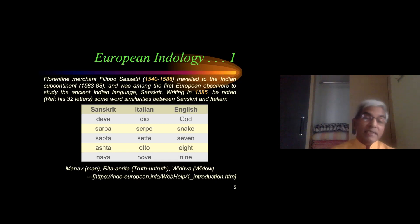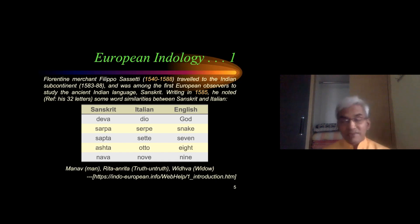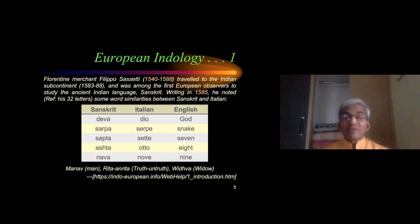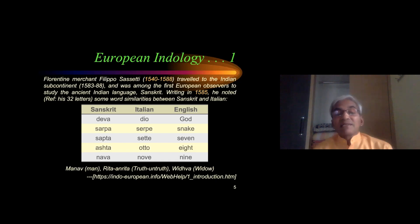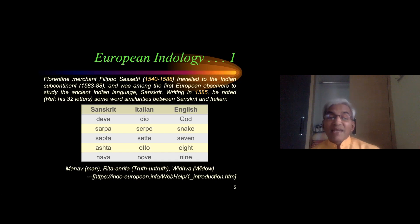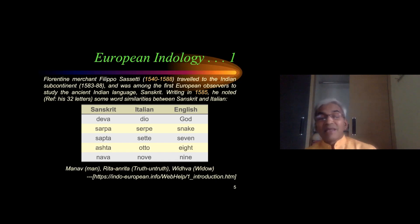He compared Sanskrit with Italian, and later it was compared with English also. He noted several words like Deva, Sarpa, Sapta, Ashta, Nava — which he compared with Italian equivalents: Deva/Dio, Sarpa/Sarpa (snake or cobra), Sapta/Sette (seven), Ashta/Otto, Nava/Nave. You also see similar words like Manav/Man in English, Ruta/Anruta equivalent to Truth/Untruth, Vitova/Widow. This was the beginning of the concept of Indo-European languages.